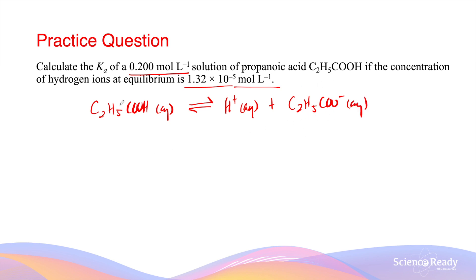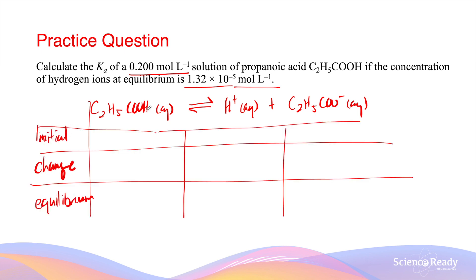Like the previous question, to determine Ka we need to first determine the concentrations of the ions and the acid at equilibrium, so we apply an ICE table. The initial concentration of the acid is 0.200 mol per liter, and at the very beginning the concentrations of the ions are both zero. Over time, as the system approaches equilibrium, the concentration of the acid decreases by x, while the ions both increase by x, as they are in a 1-to-1 reaction ratio.